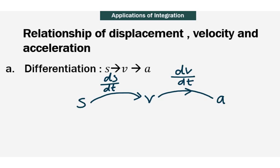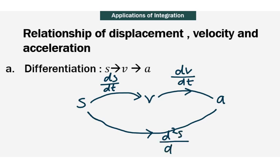When you differentiate the equation of the velocity with respect to time, you will be able to get acceleration. In other words, if you are given the displacement equation, you will be able to get the equation for acceleration by going through the second derivative. Hence, we can say that acceleration can be written as the second derivative of S with respect to t squared.